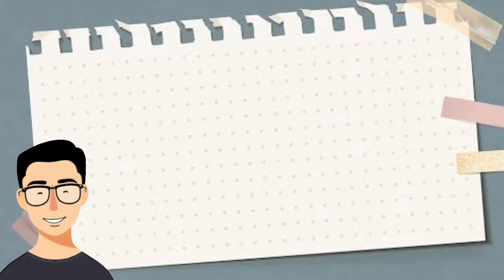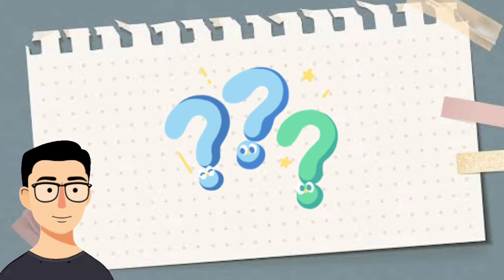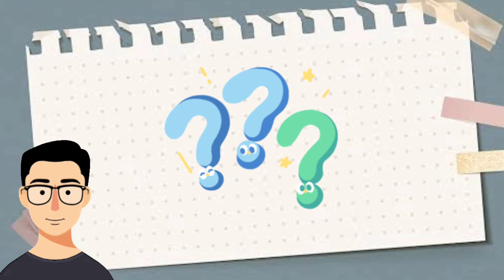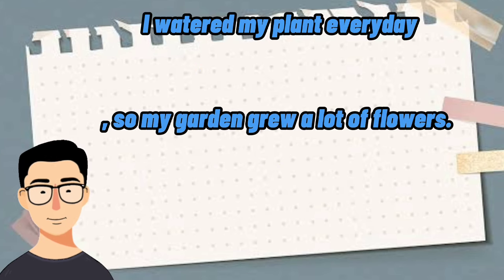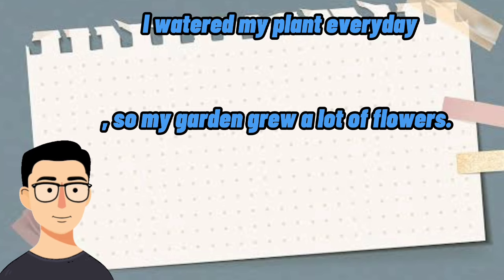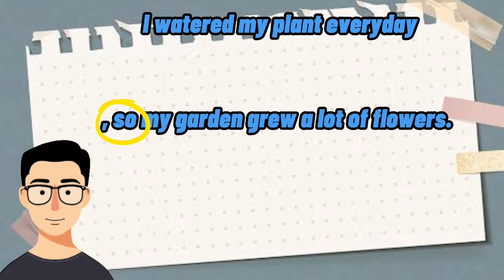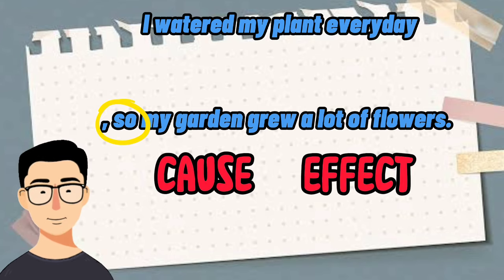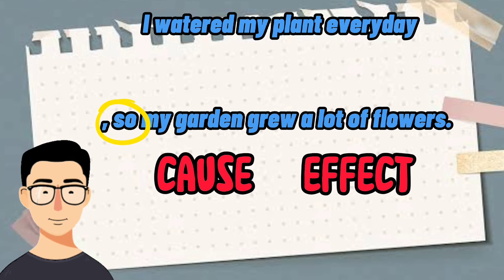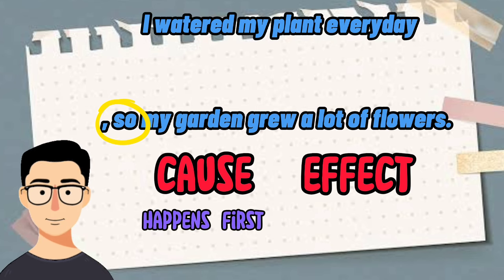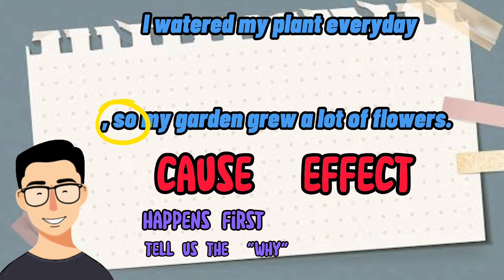Now let's spot the signal words and identify which is cause and effect. I watered my plant every day, so my garden grew a lot of flowers. We used 'so' as the signal word. Now let's identify the cause and effect. Remember, the cause happens first and tells us the why.